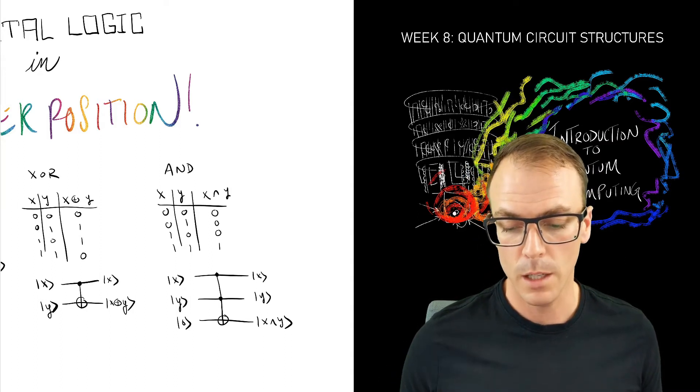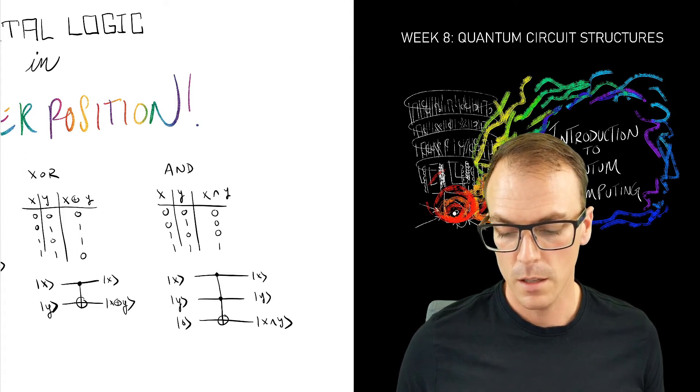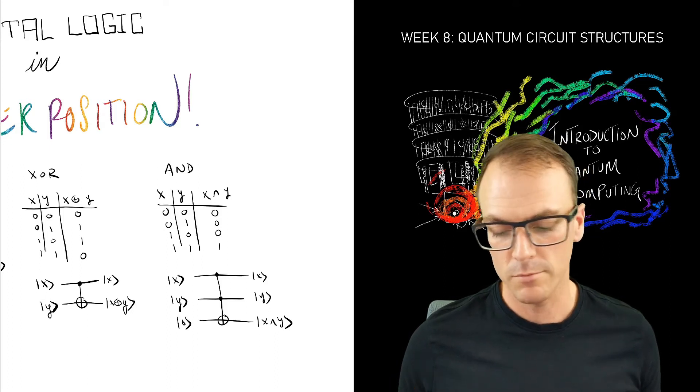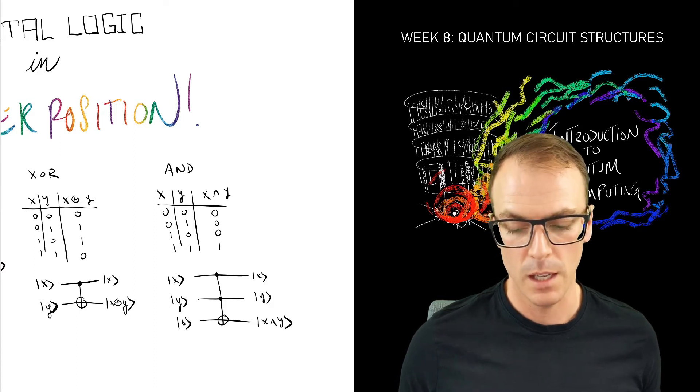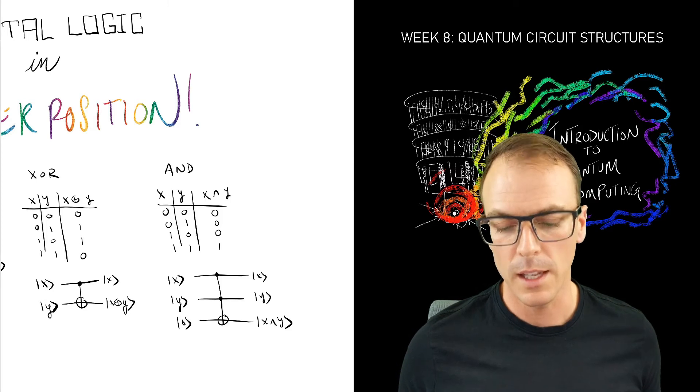So now we need three qubits: one place to store the output. And depending on the complexity of the circuit we might call this the work qubit because it stores some computation, or if this was the end of it we would call that the output register.